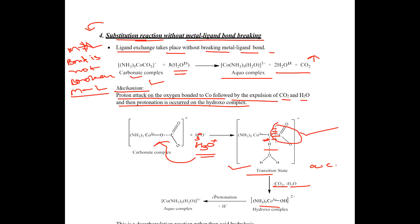The hydroxyl complex then undergoes protonation: OH reacts with H+ and an aquo complex is formed. So the metal-ligand bond — cobalt and oxygen of carbonate — has not broken, but the carbonate ligand has been converted into H2O, replaced by H2O. This is the substitution reaction without breaking the metal-ligand bond.